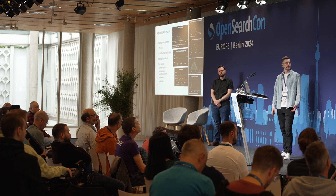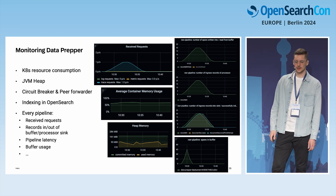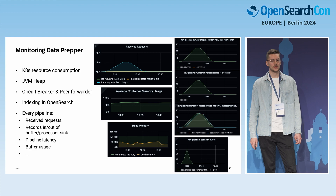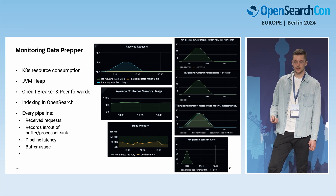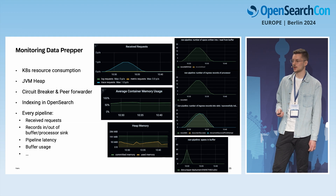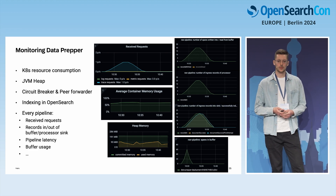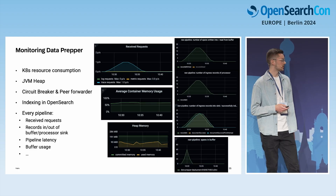To cover how we monitor DataPrepper: we scrape metrics exported via Prometheus and build a Grafana dashboard on top. We monitor Kubernetes resource consumption such as CPU utilization and memory. We also monitor the JVM heap since DataPrepper is written in Java, circuit breaker triggers, and how many spans are processed by the peer forwarder. For OpenSearch indexing stats, we track document flow per second and index sizes. Within DataPrepper itself, we can monitor every pipeline — the number of received requests, records going in and out, individual pipeline component metrics, pipeline latency, buffer usage, and more.